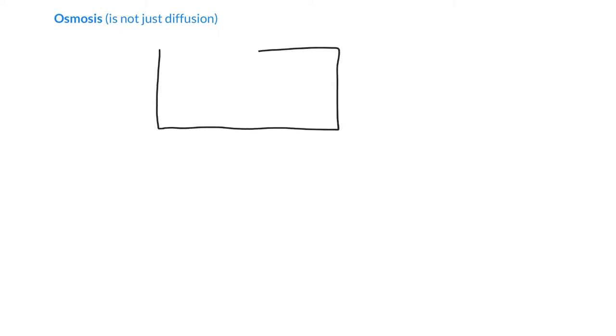So now we know a bit more about diffusion, so we can talk about osmosis. Osmosis is not just diffusion — it really irks me when people say, 'Oh, osmosis, that's just diffusion, isn't it?' Well, no, it's not actually — it's quite different. The reason it's different is that osmosis is diffusion for one thing, the small molecules, but not the other, the big molecules. So one set of molecules diffuses and the other does not.